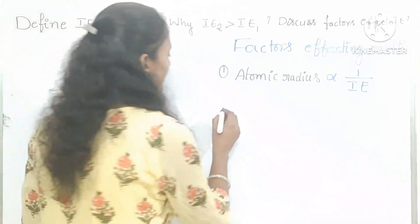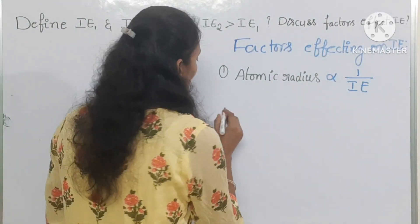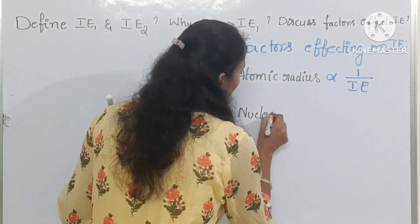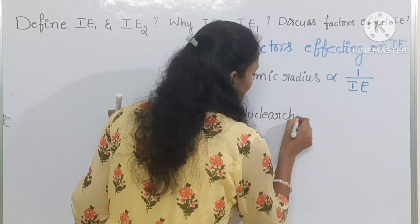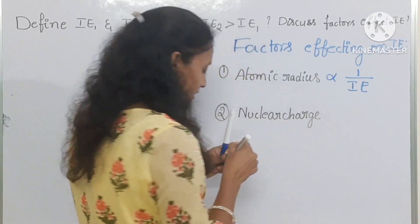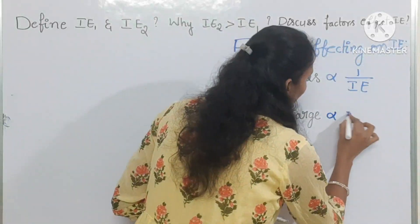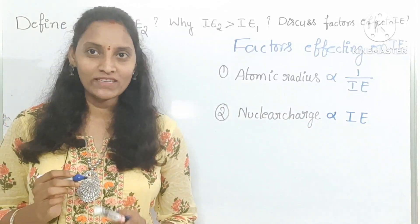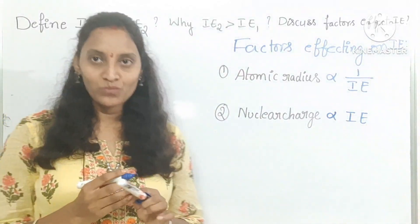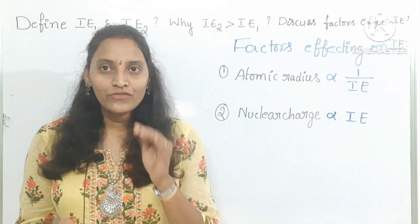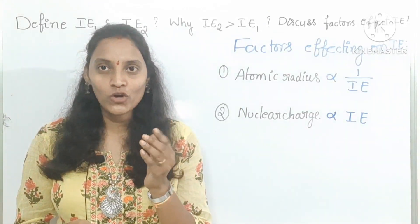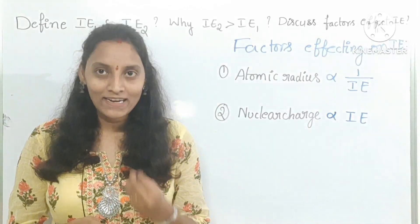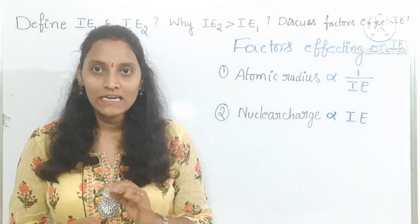The second factor is nuclear charge. Nuclear charge is directly proportional to the ionization enthalpy. If the nuclear charge is more, the force of attraction on the electron in the outer shell will be more, so it needs more energy to remove that electron from the outer shell.